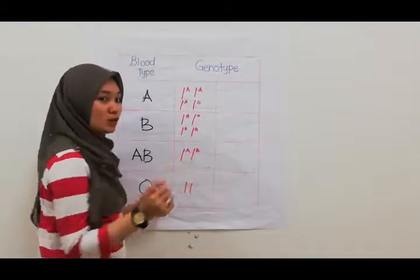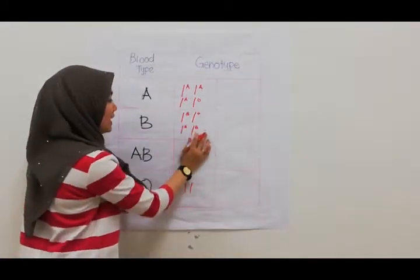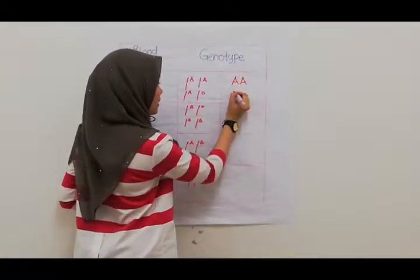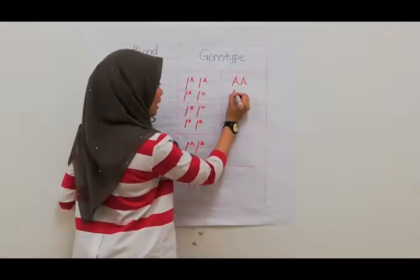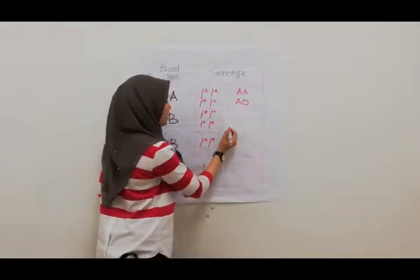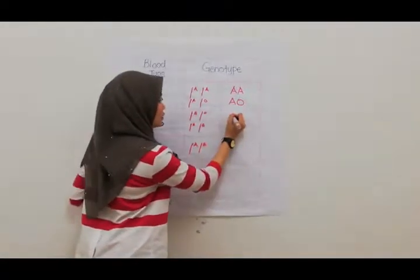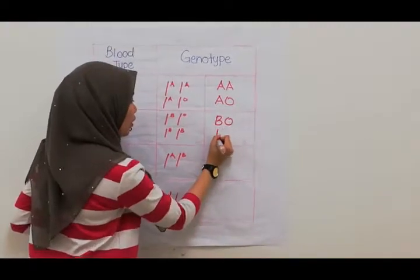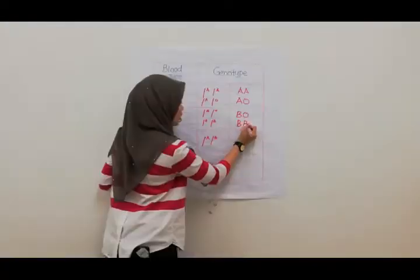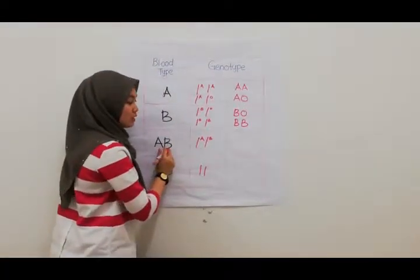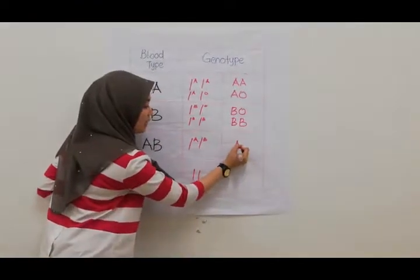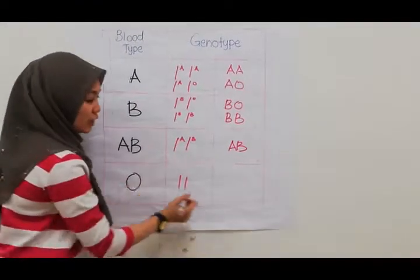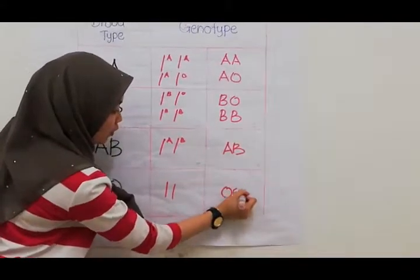For blood type AB, it is only IA and IB. And for blood type O, it is IOIO. So there will be six different genotypes at the human ABO genetic locus. How to write it: blood type A is AA or AO; blood type B is BB or BO; blood type AB is AB; and blood type O is OO.